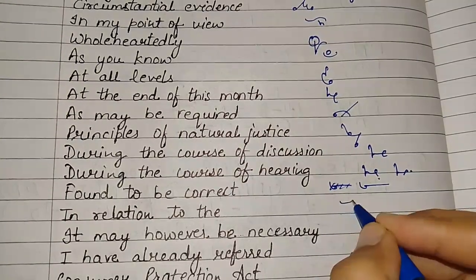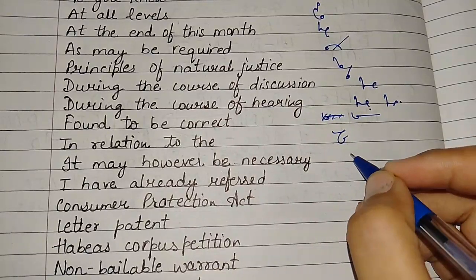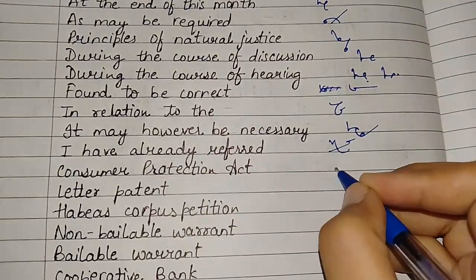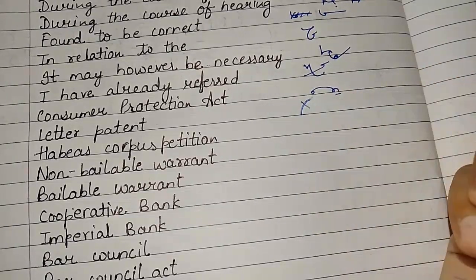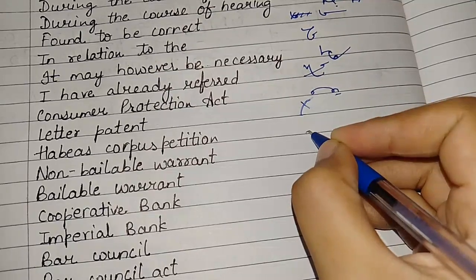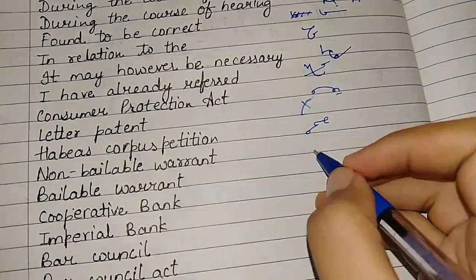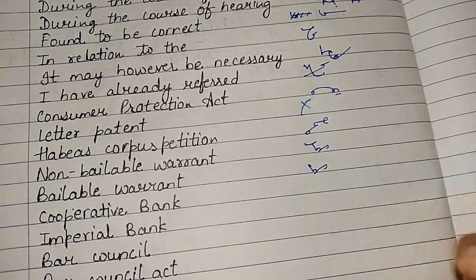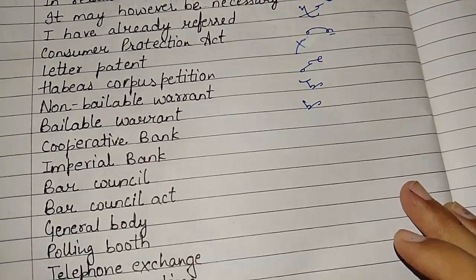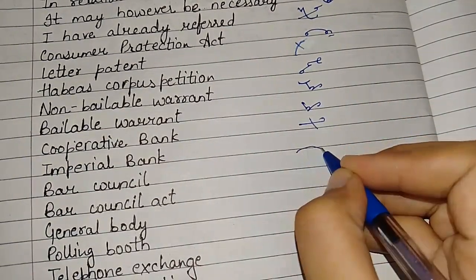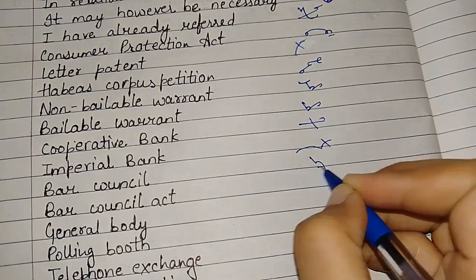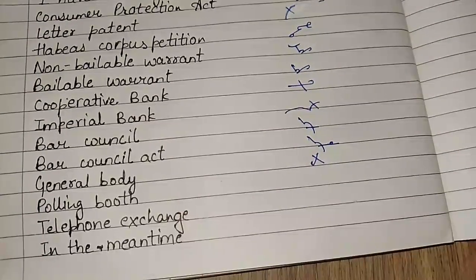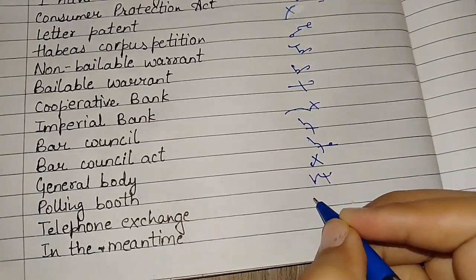In relation to the, it may however be necessary, I have already referred. Consumer protection act, letter patent, habeas corpus petition, non-bailable warrant, bailable warrant. Next is cooperative bank, imperial bank, bar council, bar council act, general body, polling booth, telephone exchange.